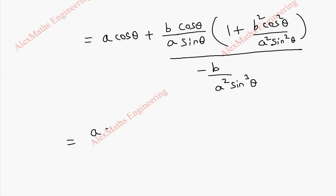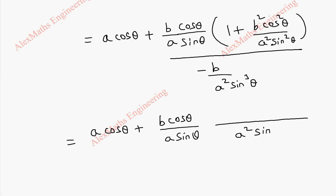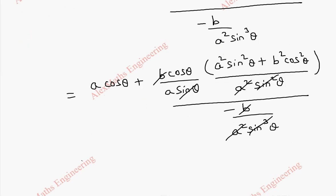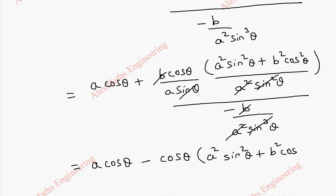In the numerator we are going to take LCM. So: a cos θ plus b cos θ divided by a sin θ. Taking LCM as a² sin² θ, we get a² sin² θ plus b² cos² θ in the numerator, whole divided by minus b by a² sin³ θ. We can cancel sin² with sin³ giving sin, and cancel a² with a². We can also cancel b and b.